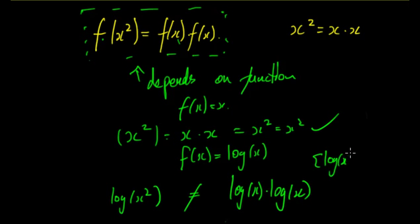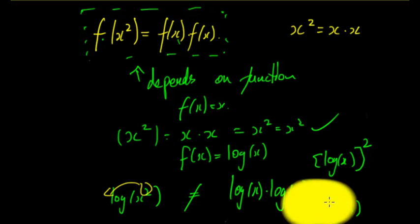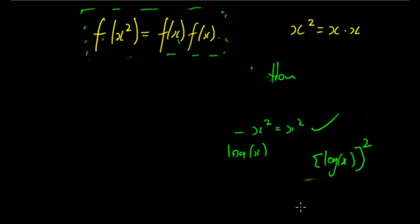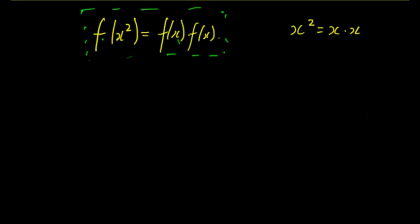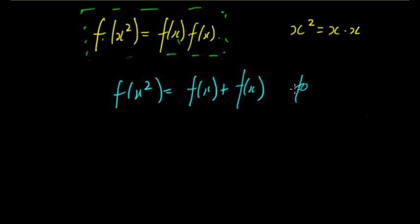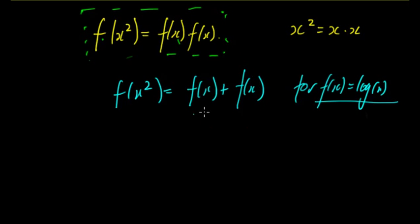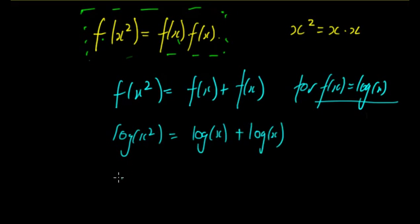log(x²) is not equal to log(x)·log(x). log(x)·log(x) is [log(x)]², whereas log(x²) can be simplified by bringing the power down, giving 2·log(x). So for f(x) = log(x), the equation f(x²) = f(x)+f(x) holds instead. The left-hand side becomes 2·log(x) and the right-hand side also becomes 2·log(x), so they are equal.